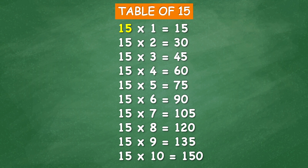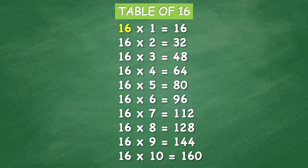Table of 15: 15 times 1 equal 15, 15 times 2 equal 30, 15 times 3 equal 45, 15 times 4 equal 60, 15 times 5 equal 75, 15 times 6 equal 90, 15 times 7 equal 105, 15 times 8 equal 120, 15 times 9 equal 135, 15 times 10 equal 150.